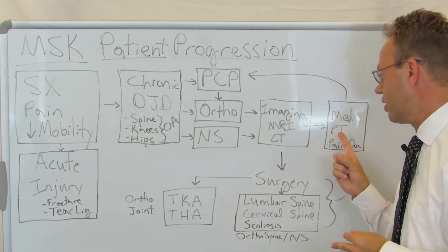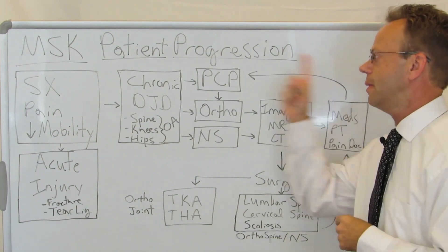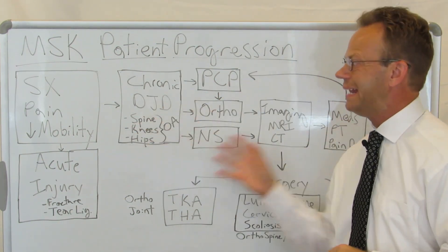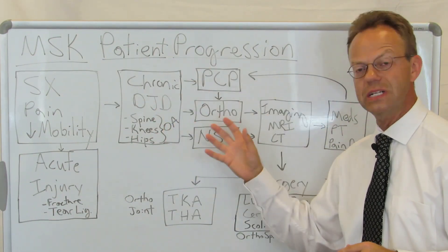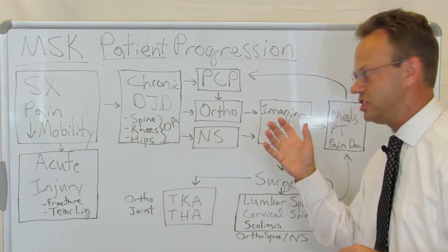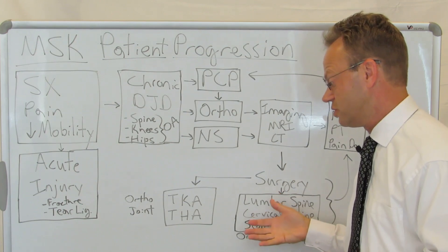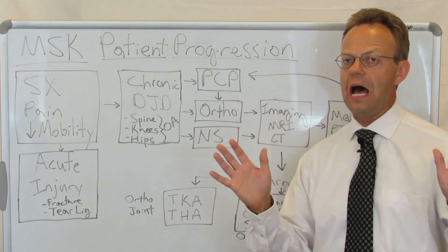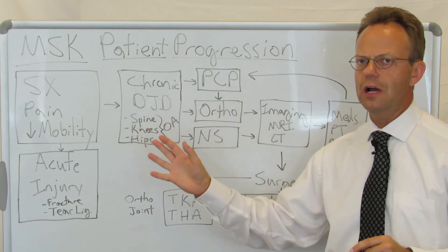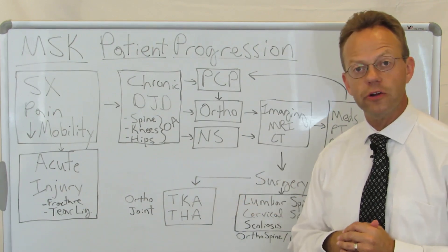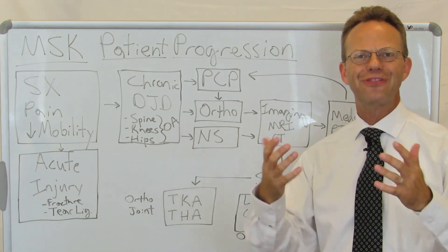After surgery, patients typically go back to medical management and physical therapy. Spine surgery may not always be successful, and patients often return to pain doctors afterward, and ultimately back to the primary care physician. At the end of the day, the musculoskeletal patient progression is fairly straightforward: is it acute or chronic? If chronic, do you see a PCP first or go straight to an interventionist? Then you get imaging and decide between medical management or surgery — spine or knee and hip. Similar to cardiac and cancer, there are places within this flow where employers can intervene to increase quality and decrease cost of musculoskeletal care for their employees. Thank you for watching A Healthcare Z.